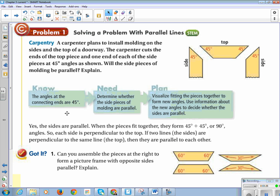So what we know is that the angles at the connecting ends are 45 degrees. We need to determine whether the side pieces of molding are parallel. We're going to try to fit the pieces together to form new angles and use information about the new angles to decide whether the sides are parallel. So from the information given, we can say yes, the sides are parallel. When you put the pieces together, 45 plus 45 equal a 90 degree angle. So each side is perpendicular to the top. If each side is perpendicular to the top, then they are parallel to each other.